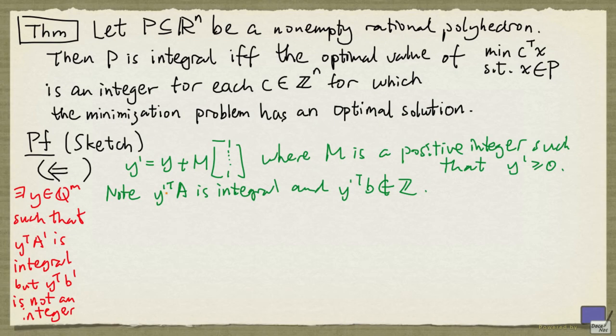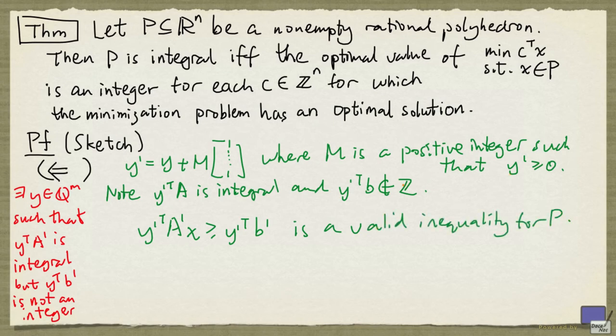Because y' is non-negative, y' transpose A' x greater than or equal to y' transpose b' is a valid inequality for p. And if x is an element of f, it will satisfy this with equality.